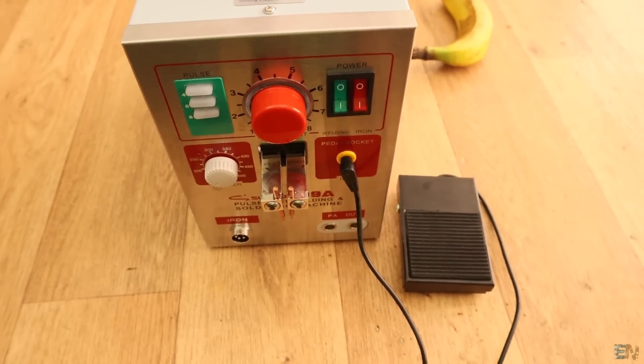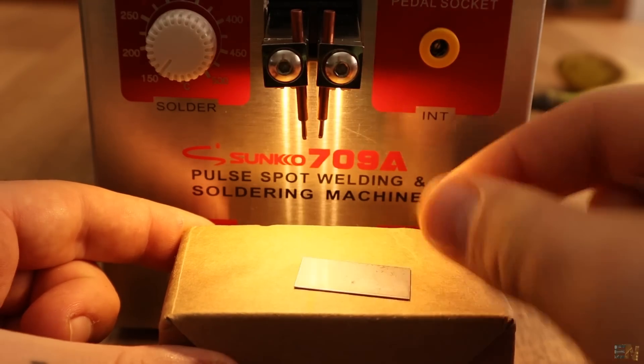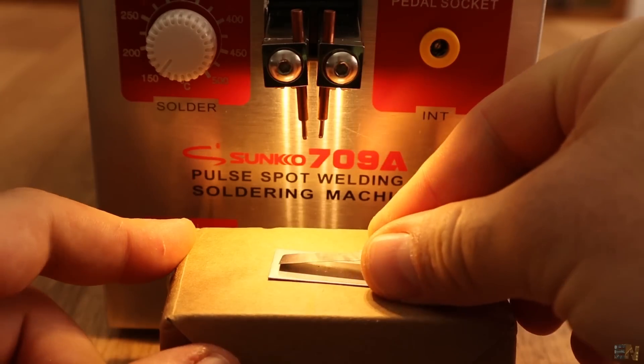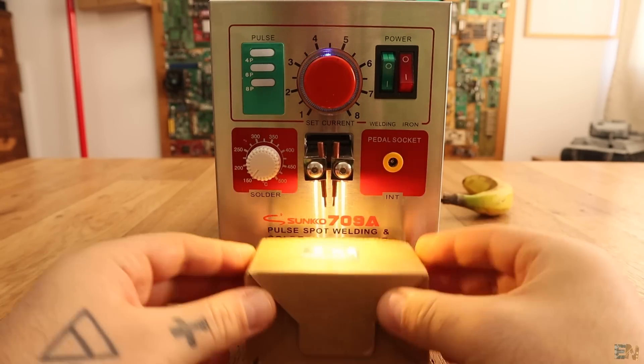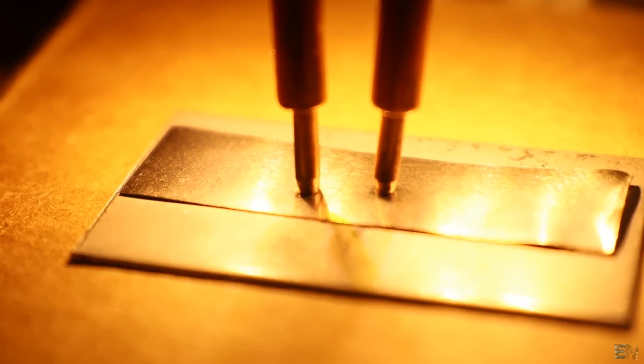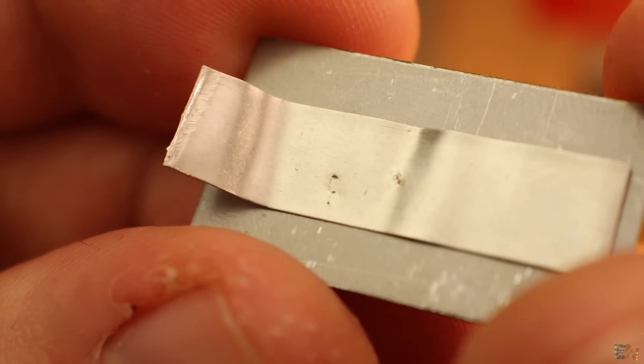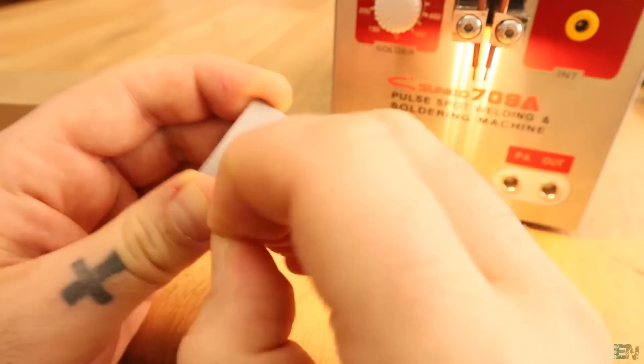Now let's do a small test. I set the power to 5 and I grab a piece of steel and another one of pure nickel that you receive with the kit. I put them on top of each other, I place them under the copper contacts and push upwards. There was a small spark but the 2 sheets are not soldered together, because I can separate them with my fingers.